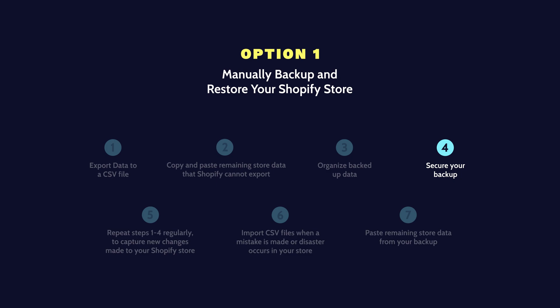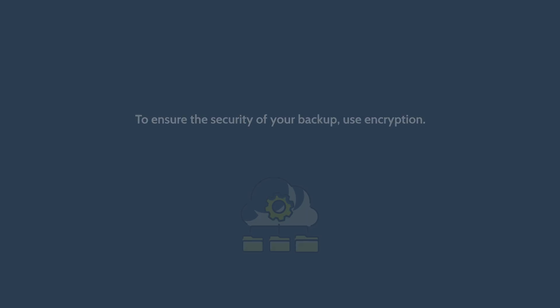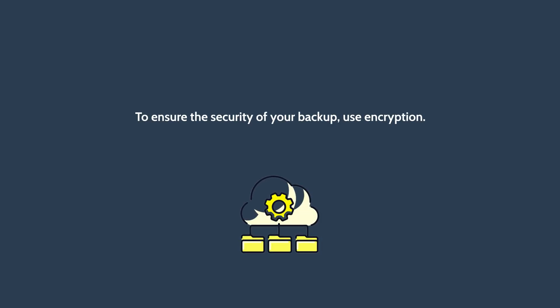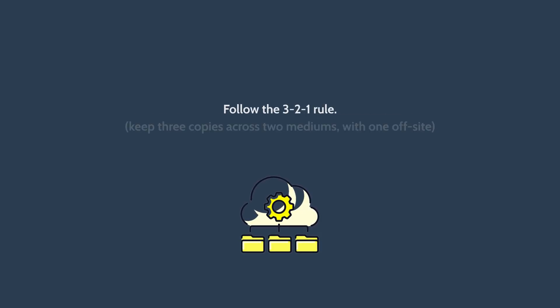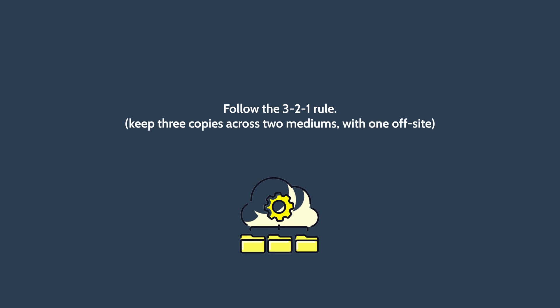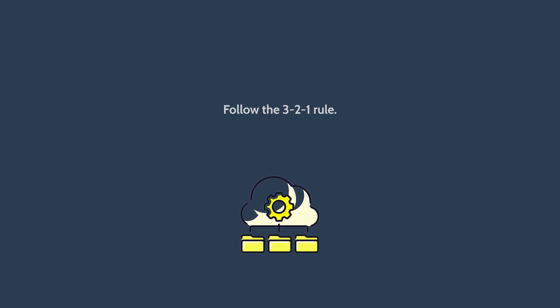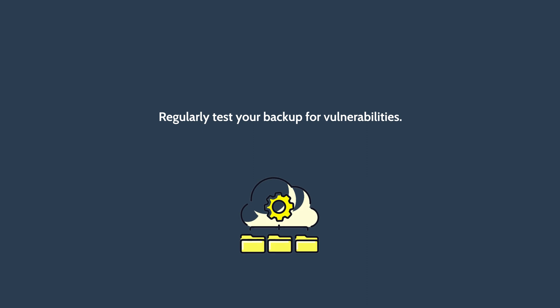Step 4: Secure your backup. To ensure the security of your backup, use encryption, follow the 3-2-1 rule — keep three copies across two mediums with one off-site — and regularly test your backup for vulnerabilities.